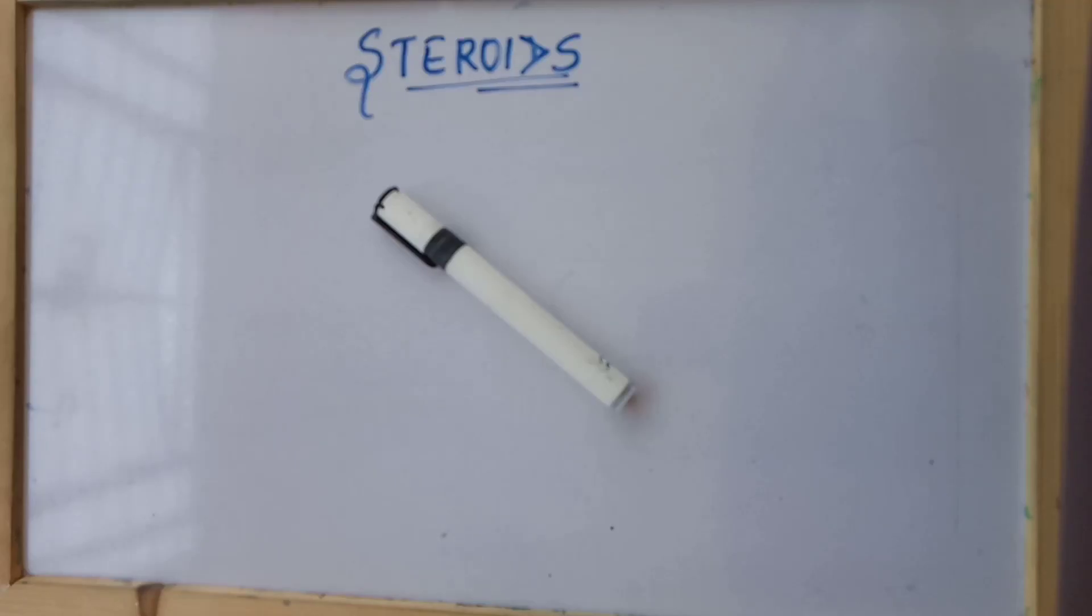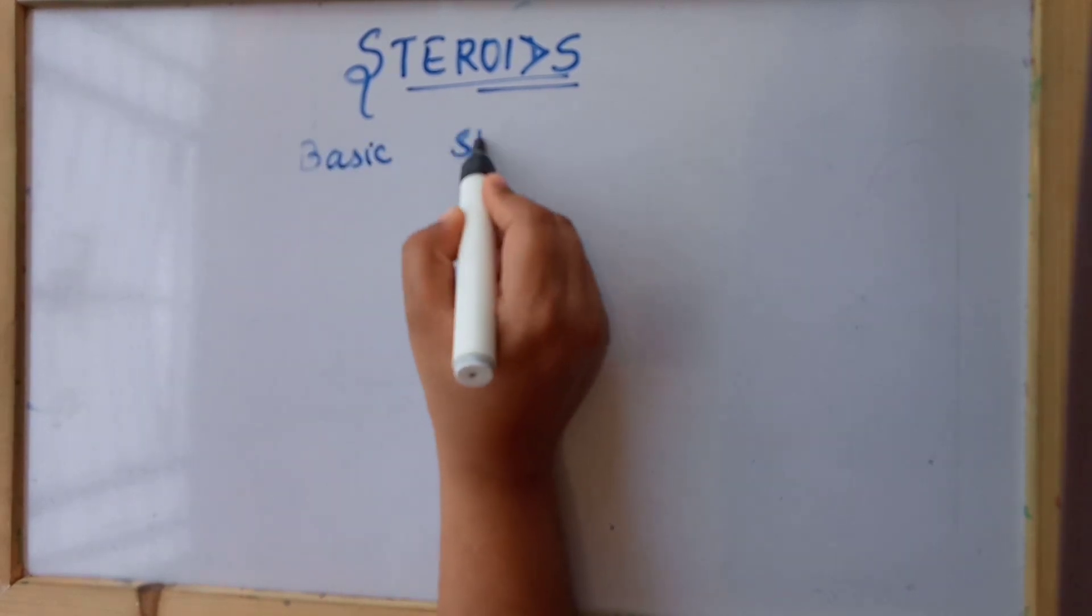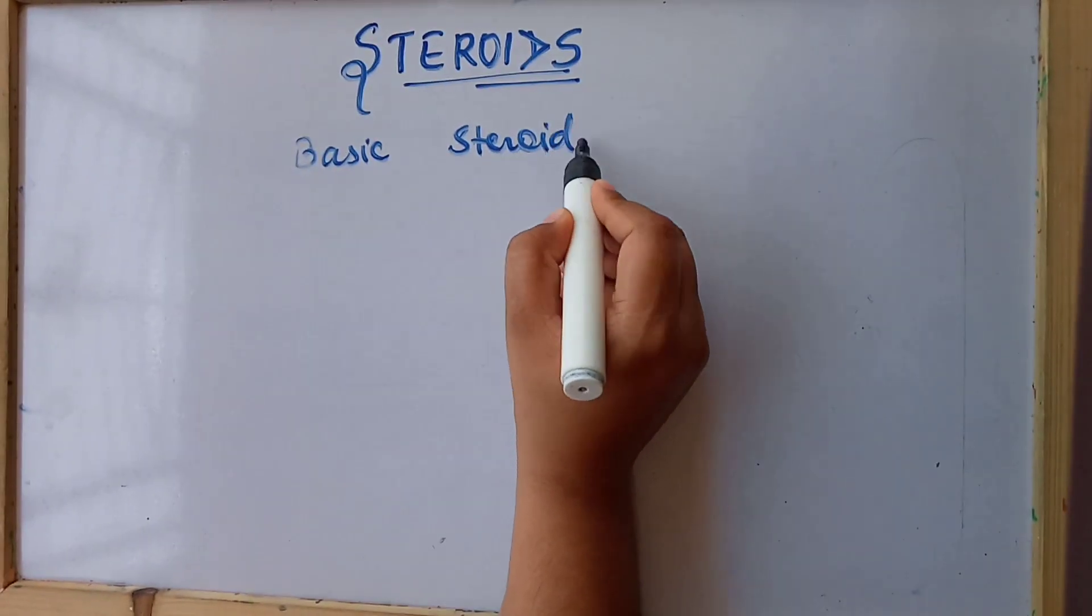Hey everyone, so today we are going to study the nomenclature of steroids. Nearly all steroids are named as derivatives on the basis of basic steroidal ring. So today we are going to study the basic steroidal ring and a trick to remember all these steroidal rings.